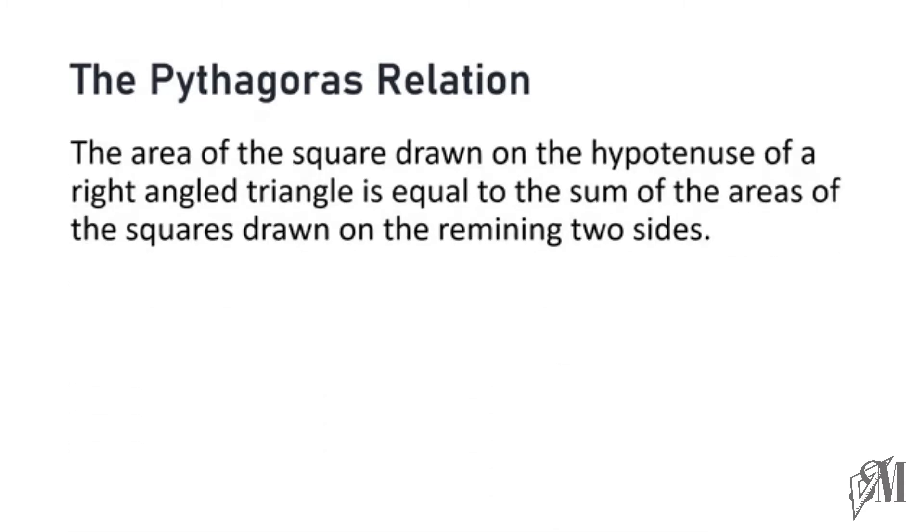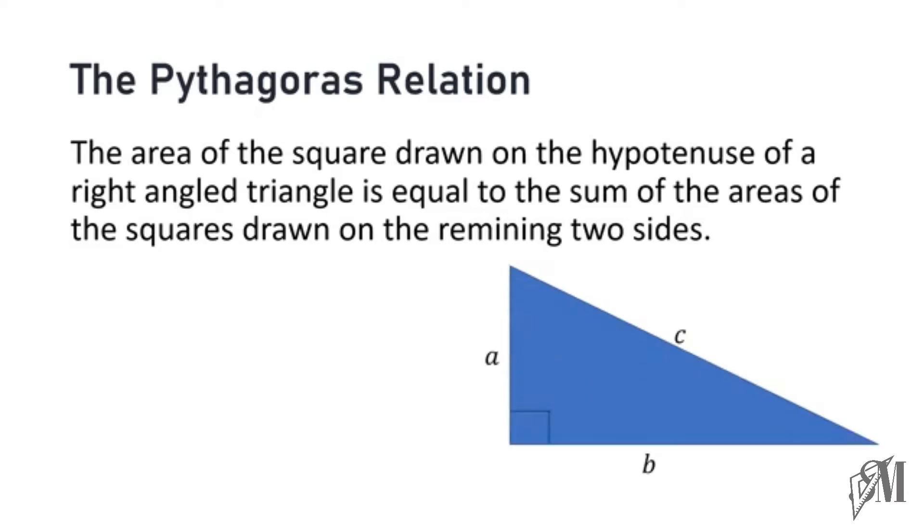The theorem says the area of the square drawn on the hypotenuse of a right-angled triangle is equal to the sum of the areas of the squares drawn on the remaining two sides. Look at this triangle—the hypotenuse is the side opposite to the right angle, so in this case, the length of the hypotenuse is c.